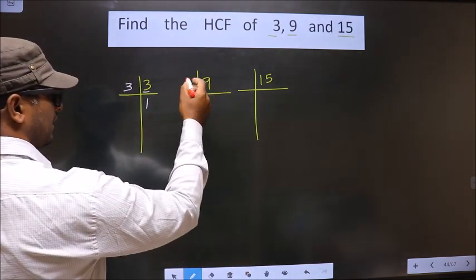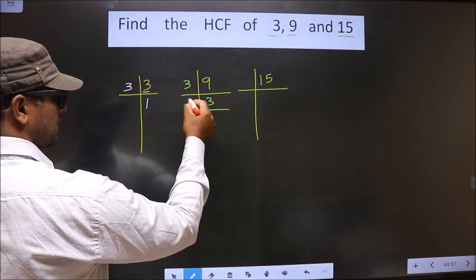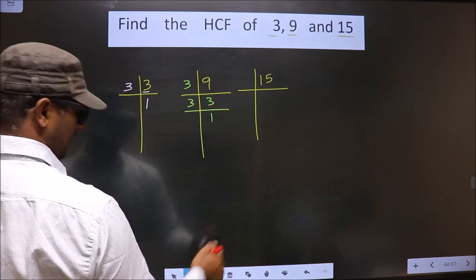Now, here we have 9. 9 is nothing but 3 times 3. Now, 3 is a prime number, so we take 3 and 1.